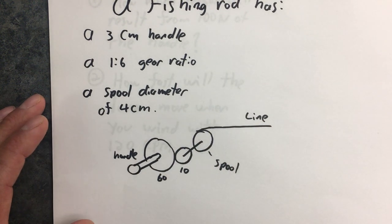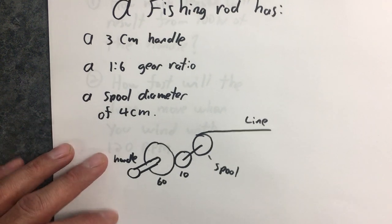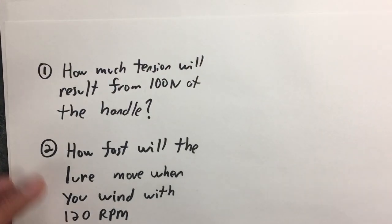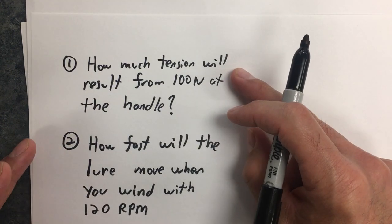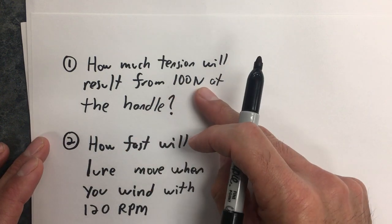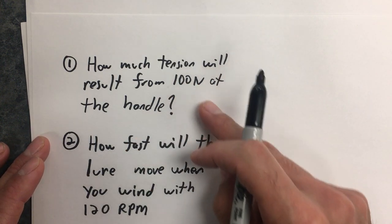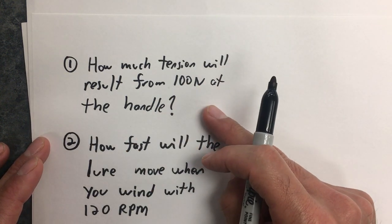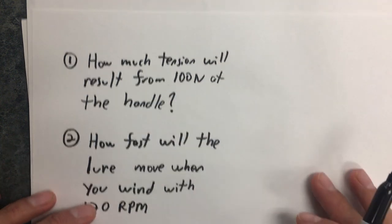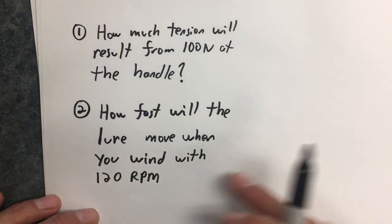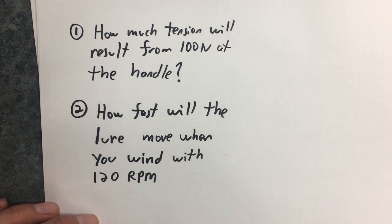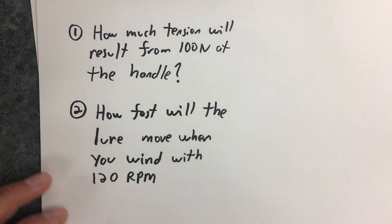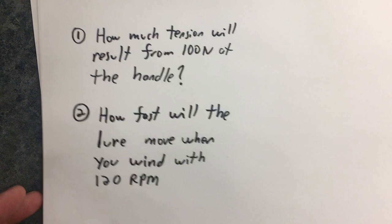There's a two-part question. First: how much tension — that's force — will result from 100 newtons being applied to the handle? Second: how fast will the lure move when you wind at 120 RPM?